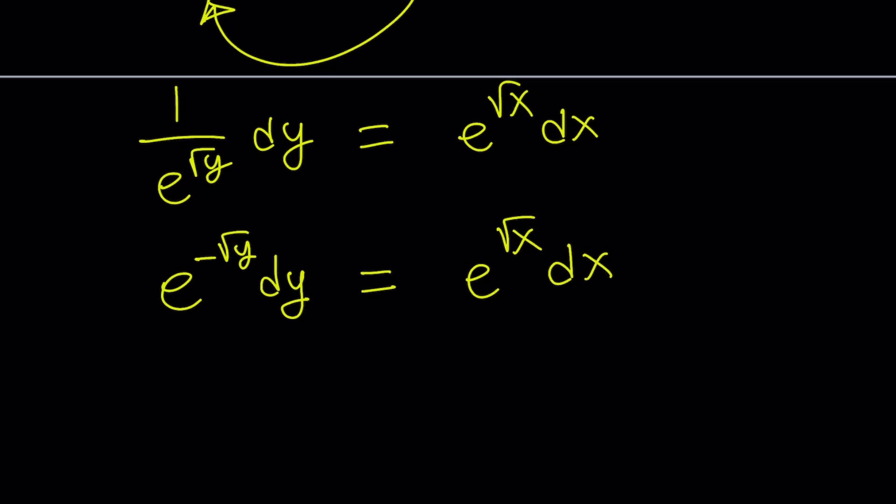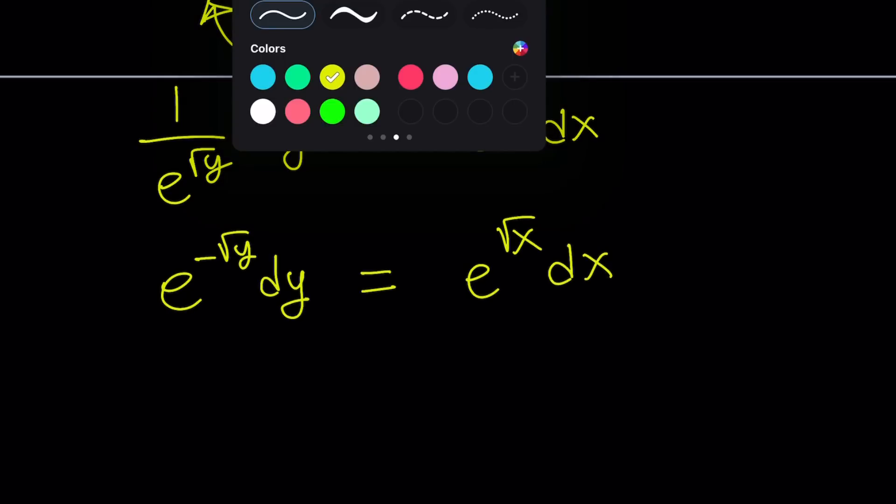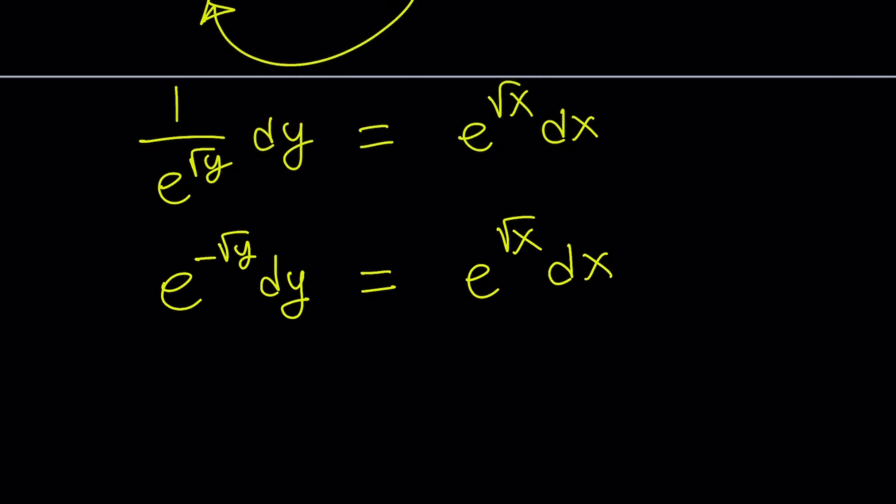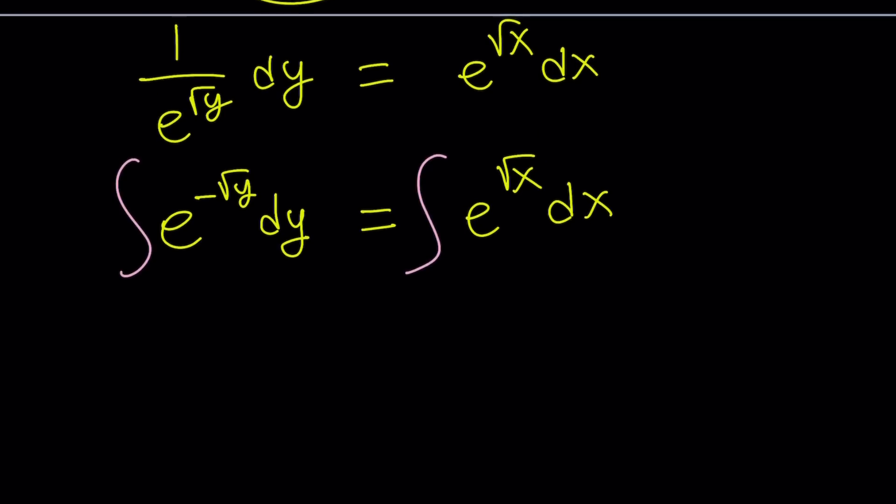Great. What can we do with this? Since we separated the variables, we can go ahead and integrate both sides. So I'm going to keep the constant on the right hand side where the x is. You don't have to put the constant on both sides because the difference of two constants is also a constant.